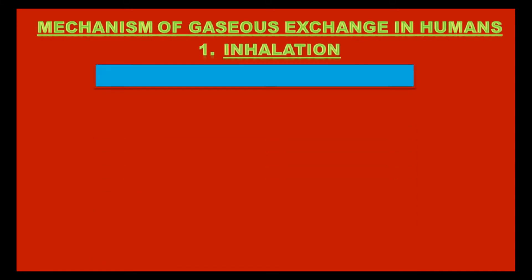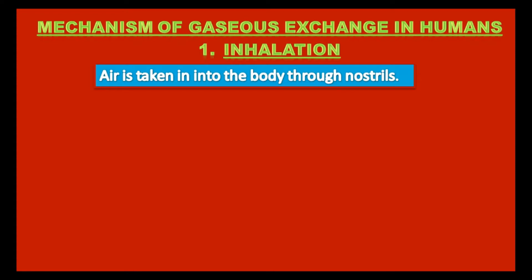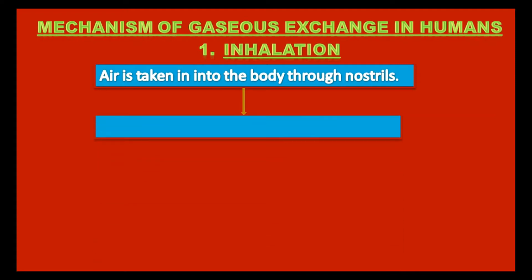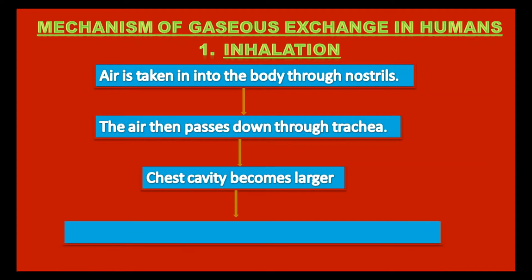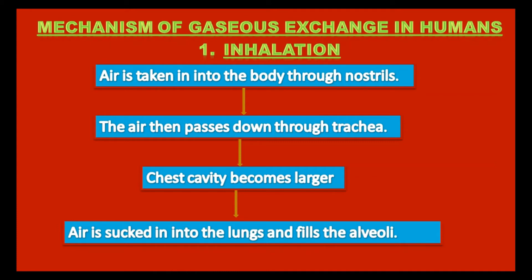The first step is Inhalation. The process of taking in oxygen from the atmosphere is inhalation. It occurs as air is taken into the body through nostrils, where it is filtered by hair and mucus. The air then passes down through the trachea. The chest cavity becomes larger due to the flattened diaphragm and lifted ribs. Air is sucked into the lungs and fills the alveoli.